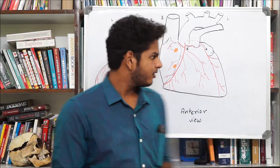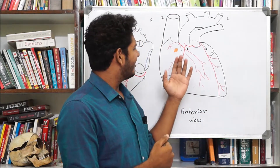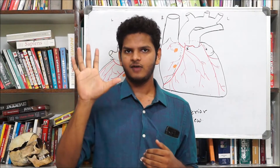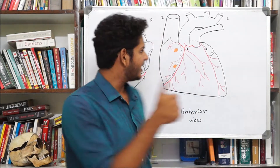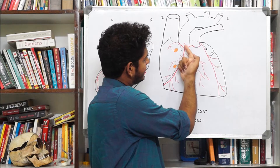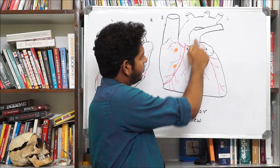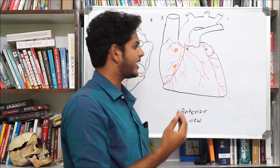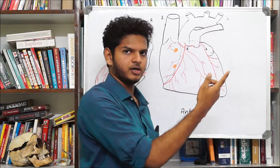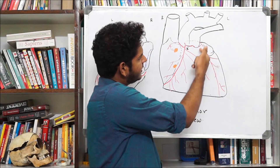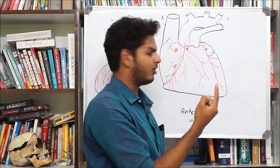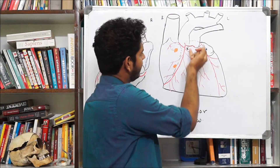The right coronary artery has anterior and posterior branches. Starting with the five anterior branches: first is the conus artery, which arises at the very start of the right coronary artery and converges toward the left near the pulmonary trunk. 'Conus' refers to the embryological outflow tracts — the aorta and pulmonary trunk. The right conus artery anastomoses with the left conus artery from the left coronary artery, forming the annulus of Vesalius.